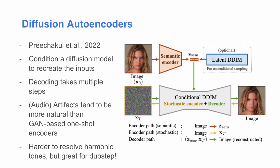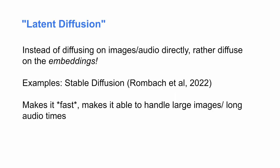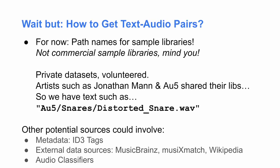It can be harder to resolve harmonic tones — we spent a lot of time on that — but for electronic music with lots of broadband, unnatural sounds, it's perfect; like it's perfect for dubstep. When we say latent diffusion, we mean we're not diffusing on the entire image or audio. Rather, we're just diffusing on the embeddings themselves. This was shown to great effect by Stable Diffusion, meaning you can do it really fast and handle very large images and very long sequence times. But where do you get your text-audio pairs?